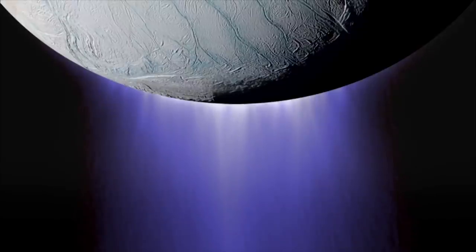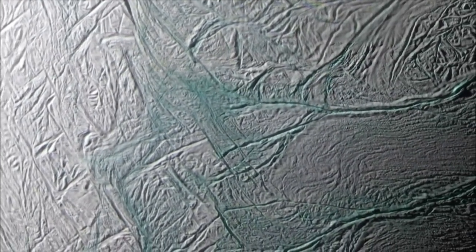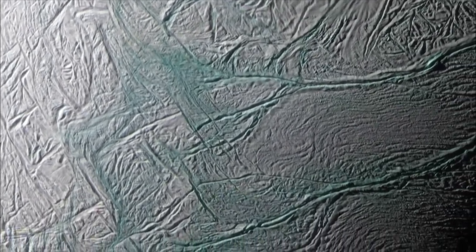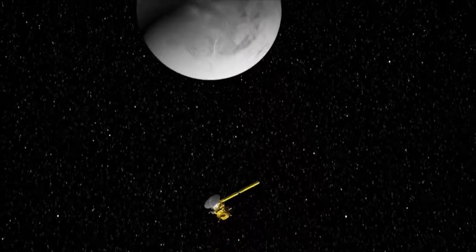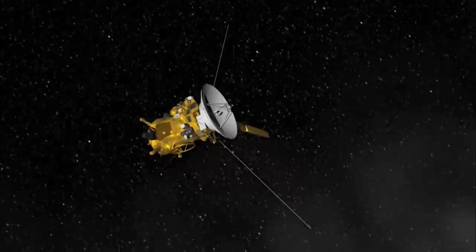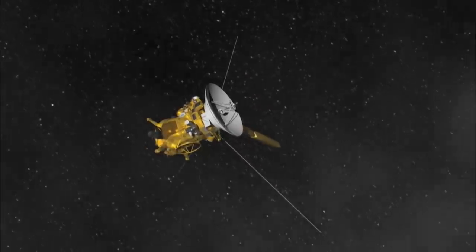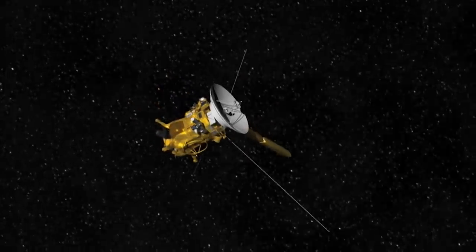Here Cassini spotted vast geysers of water vapor shooting outward from a region near its south pole. The vapor carries fine grains of dust, which escape into space and form a diffuse ring along Enceladus's orbital path around Saturn.